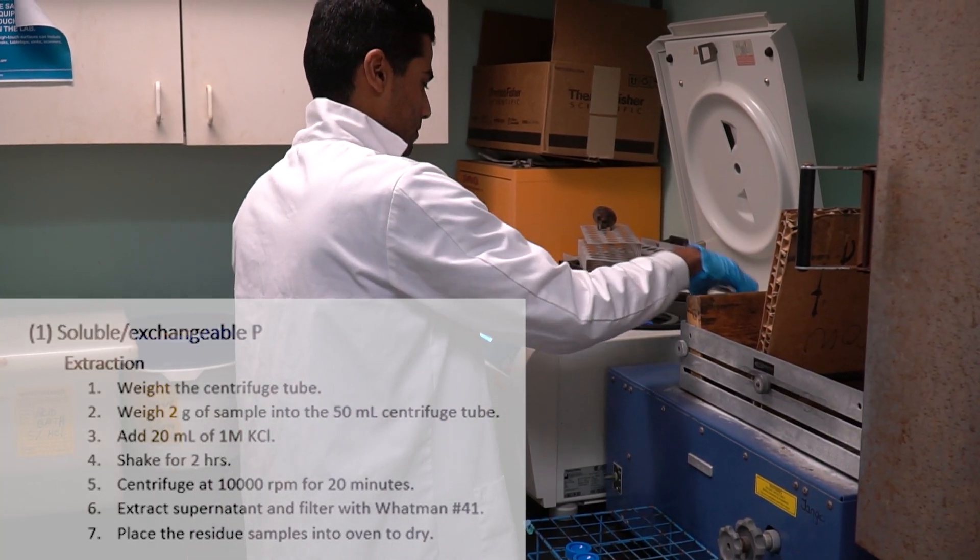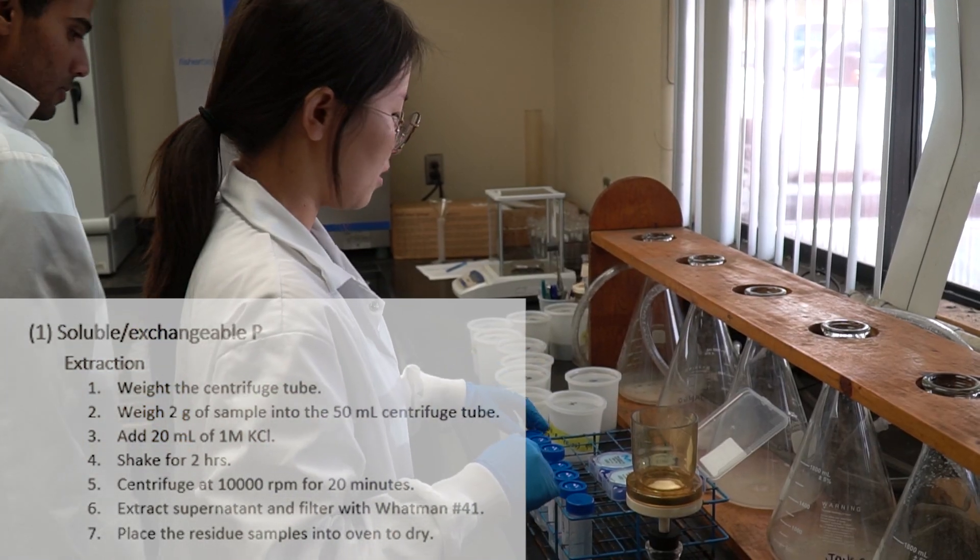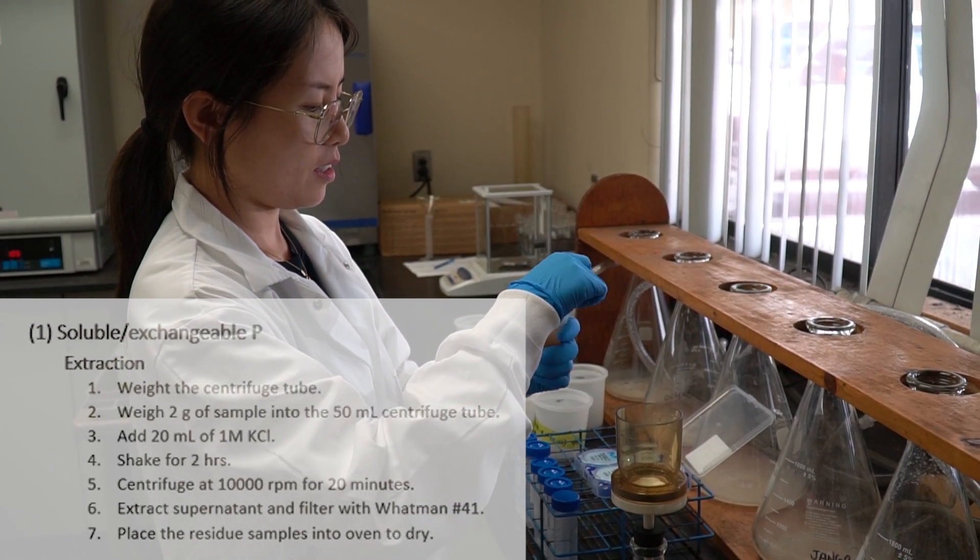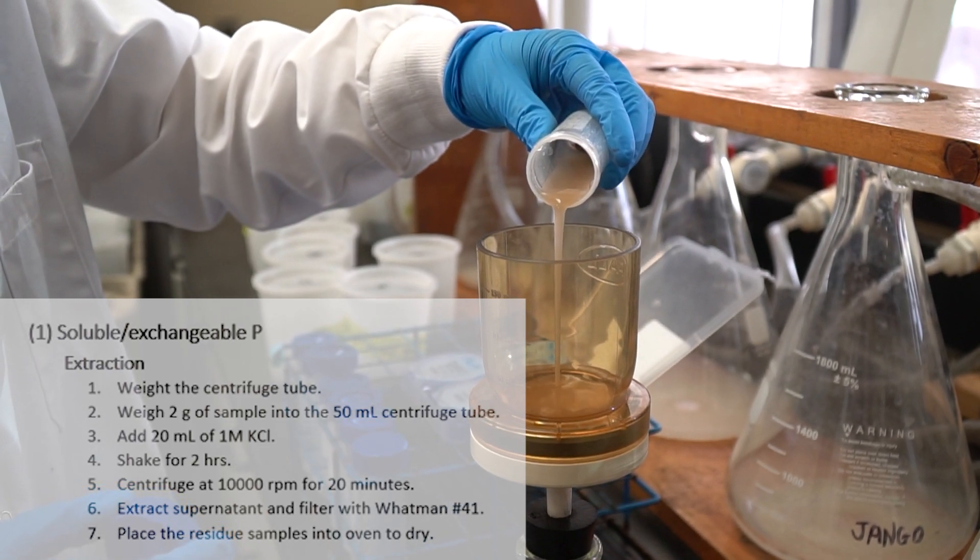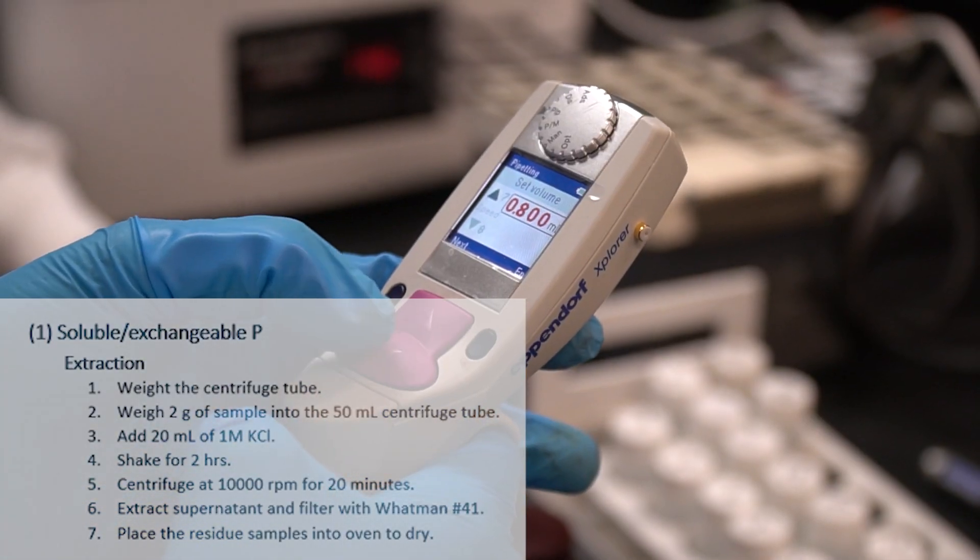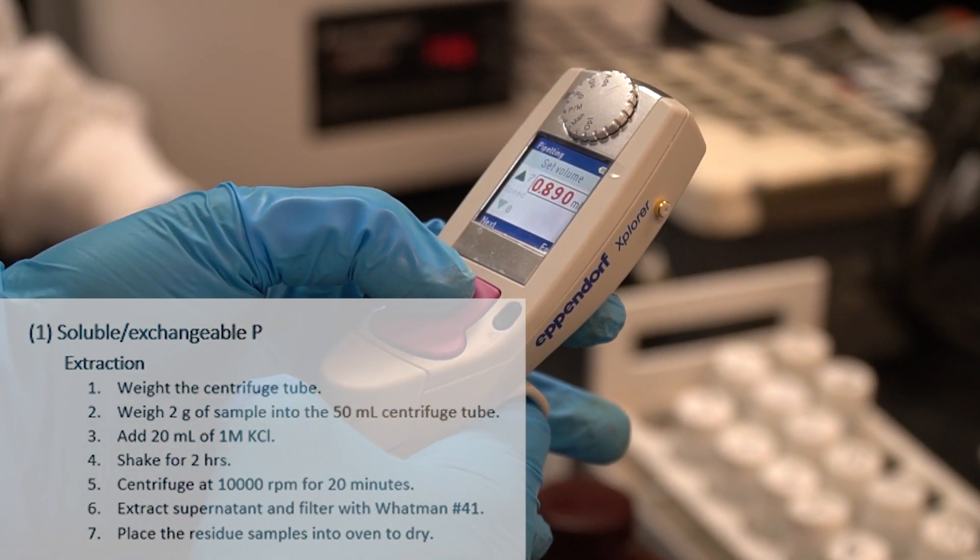After centrifugation, you have to extract the supernatant using filter paper Whatman 41. Then, the residue samples are put into the oven to dry at 60 degrees Celsius and the supernatant will be analyzed for soluble P using combined reagent.